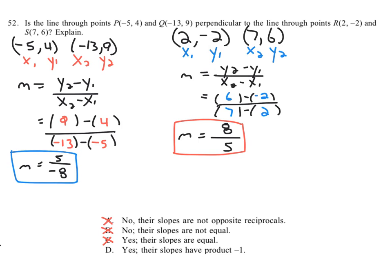And that is what opposite reciprocals do when you multiply them together. You get negative 1. So let's take these two slopes: 5 over negative 8, or negative 5 over 8, times the other slope, 8 over 5. If we were to multiply these across, we would get negative 40 over 40, or simplifying that, negative 1.